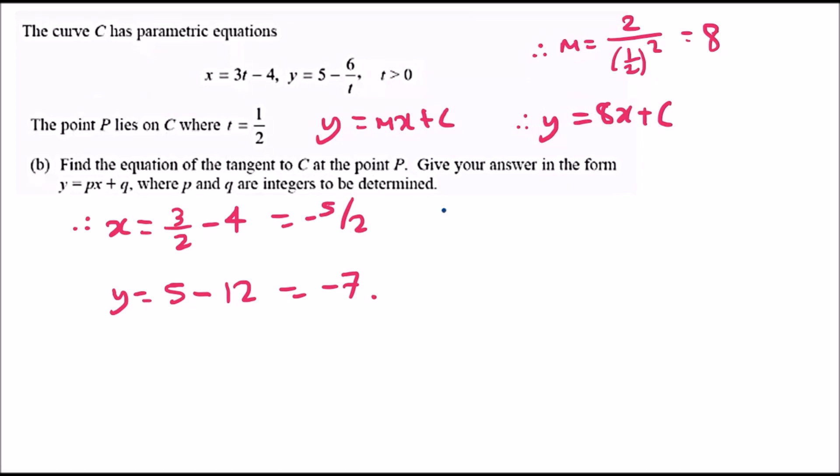Now plug these into the gradient equation. We should get minus 7 equals 8 times negative 5 over 2 plus c. Making c the subject, you're going to have minus 7 take away all of this term here, so minus 7 minus 8 times minus 5 over 2.